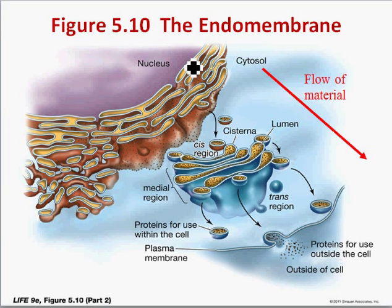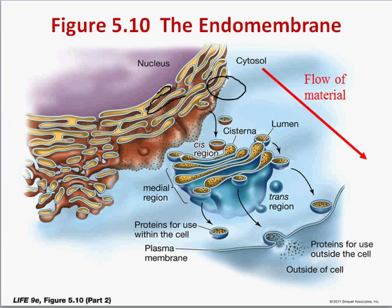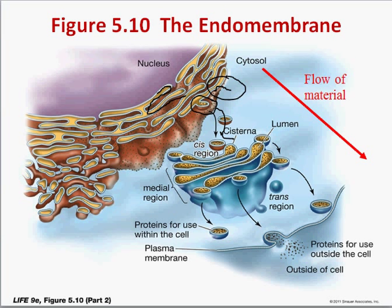The nuclear envelope is actually continuous with the rough ER, the next stop of the endomembrane system. This is the rough endoplasmic reticulum because there are ribosomes attached to it. Ribosomes are the site of protein synthesis. As proteins are synthesized at the RER, they're injected inside of the RER, where they're modified, folded up, and have carbohydrates attached. Then they're packaged into vesicles. From the rough ER, they travel via these vesicles to the Golgi, which collects vesicles from the rough ER. These vesicles fuse with the Golgi membrane and their contents are injected inside.